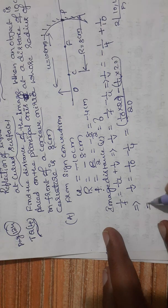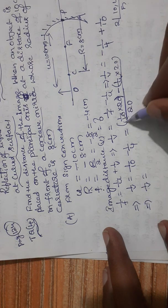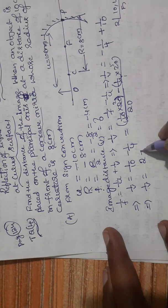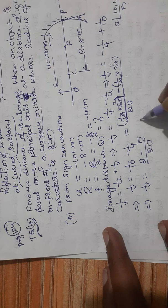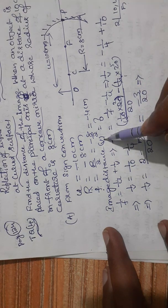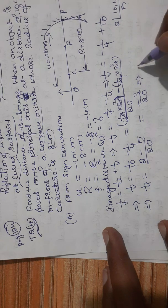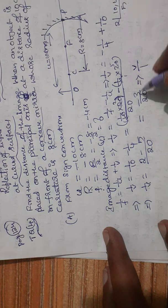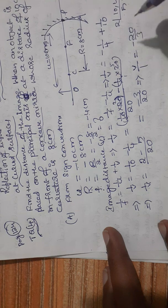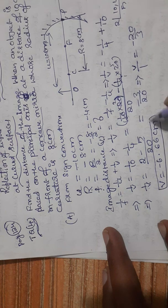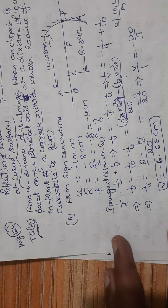So 1/v = (2 − 5) / 20 = −3/20. Since we want V and not 1/v, we take the reciprocal — reversing numerator and denominator — so V = −20/3. Therefore V equals minus 6.66 centimeters. This negative sign indicates that the image formed is a real image.